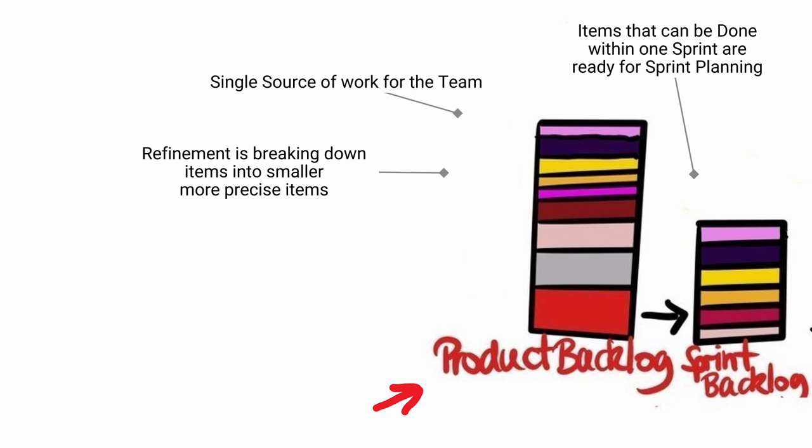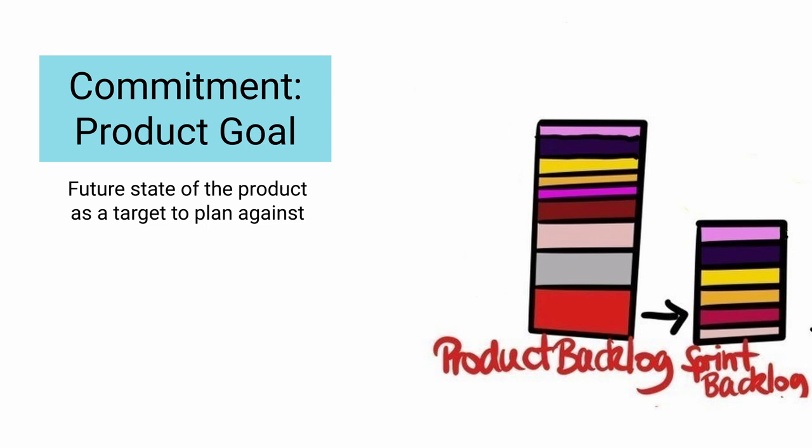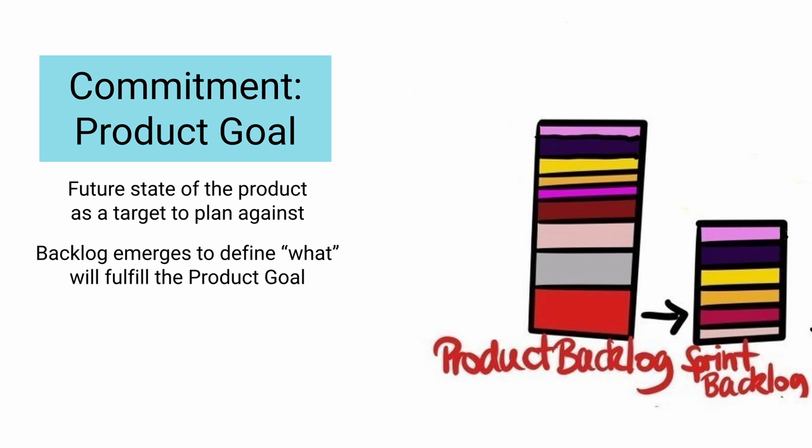The people who will be doing the work are responsible for the sizing. Commitment: Product goal. The product goal describes a future state of the product which can serve as a target for the Scrum team to plan against. The rest of the product backlog emerges to define what will fulfil the product goal. A product could be a service, a physical product or something more abstract, but it is the long-term objective of the team.